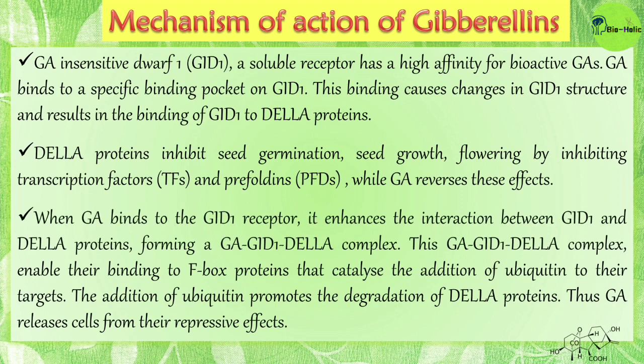Since the DELLA protein inhibits the transcription factors, the transcription process is hampered and there is no cell division or growth. When GA binds to the GID1 receptors, it enhances the interaction between GID1 and DELLA proteins, forming a GA-GID1-DELLA complex. This complex enables binding to F-box proteins that catalyze the addition of ubiquitin to their targets. The addition of ubiquitin promotes the degradation of DELLA proteins.